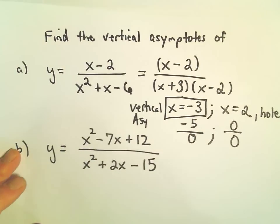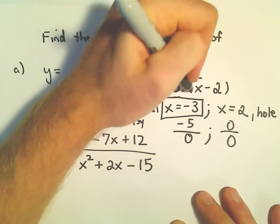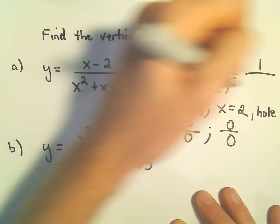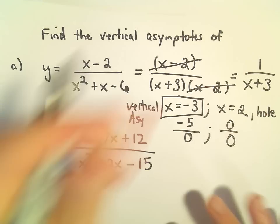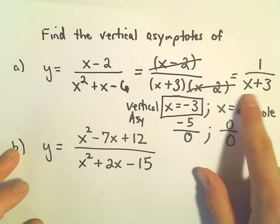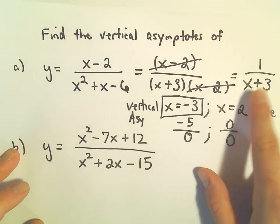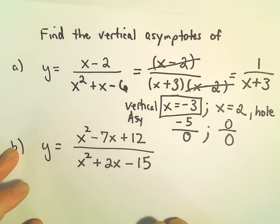So sometimes what people will do is they'll just sort of factor and cancel everything out. And here you're left with 1 over x plus 3. And once everything's simplified, in this case, whatever makes the denominator equal to 0, that'll be your vertical asymptote.